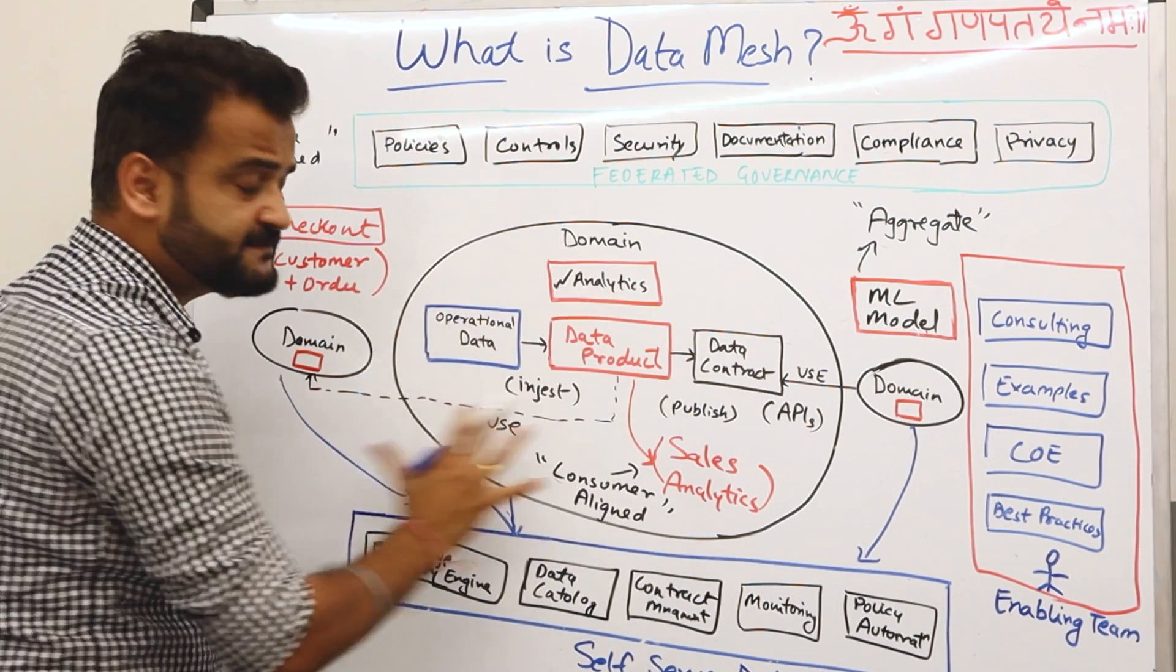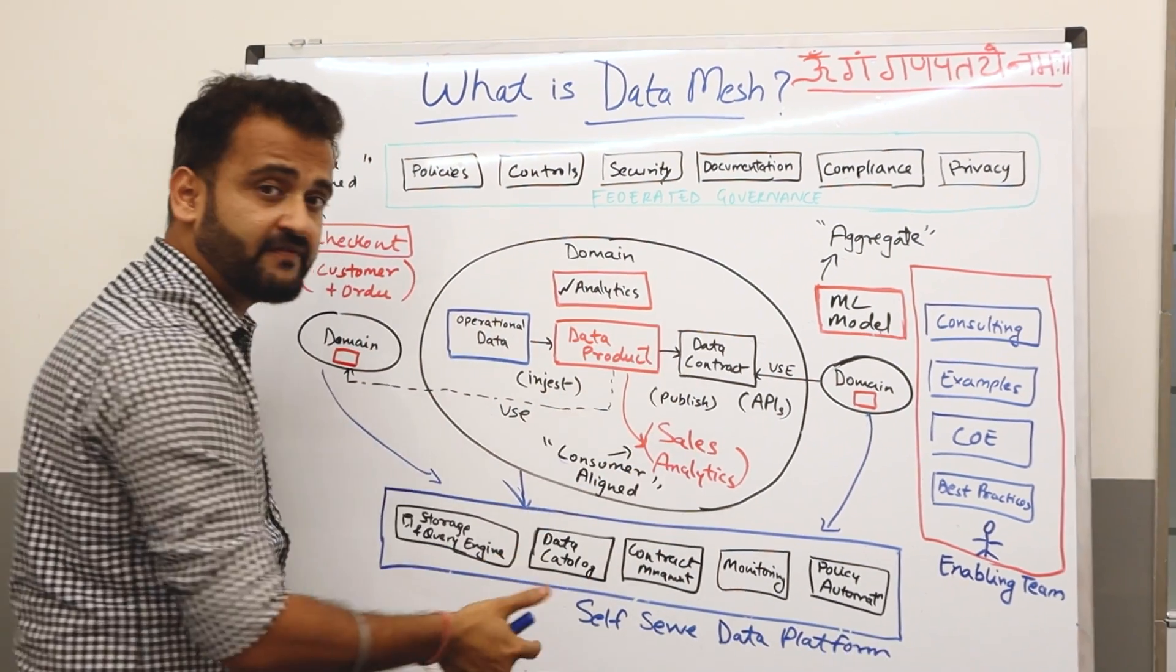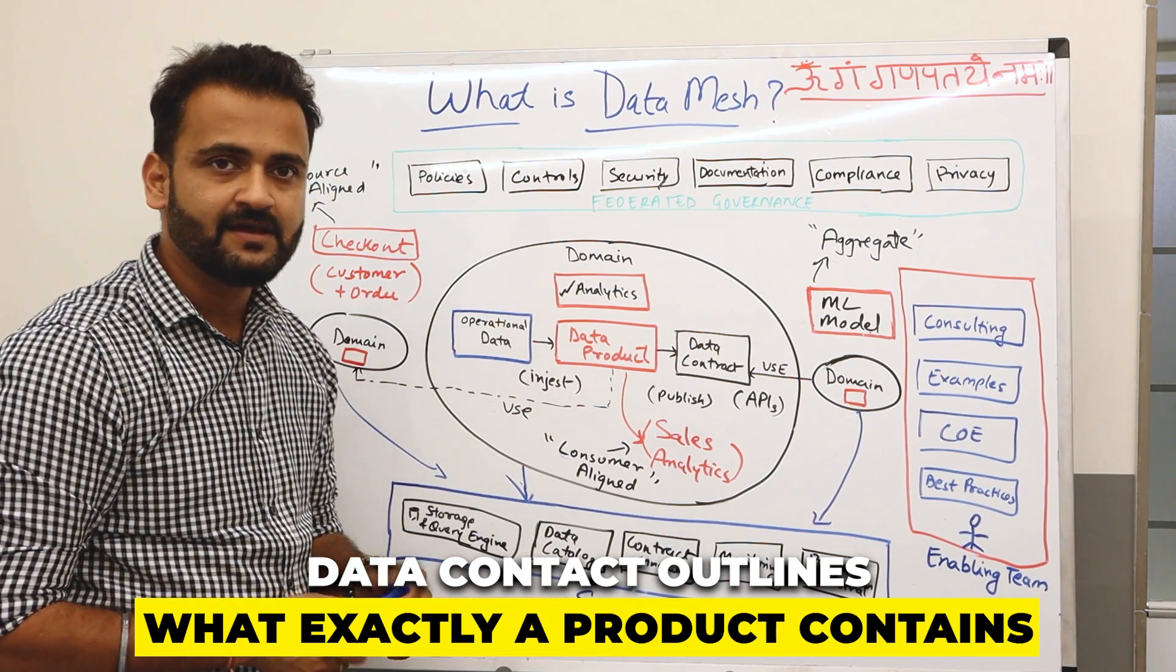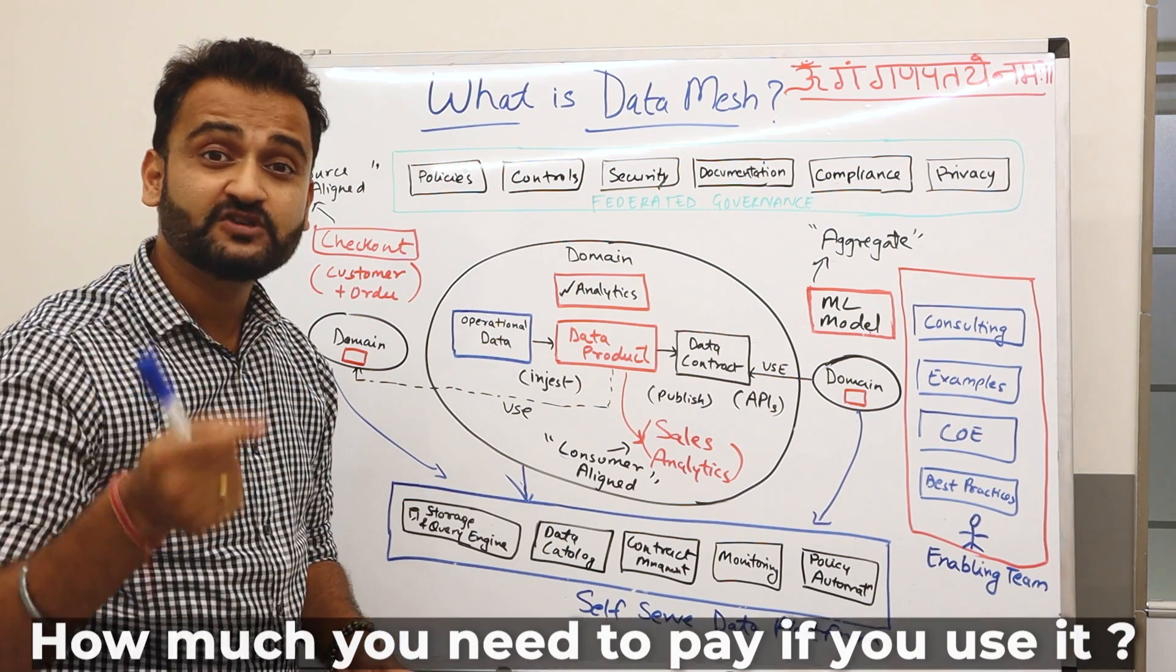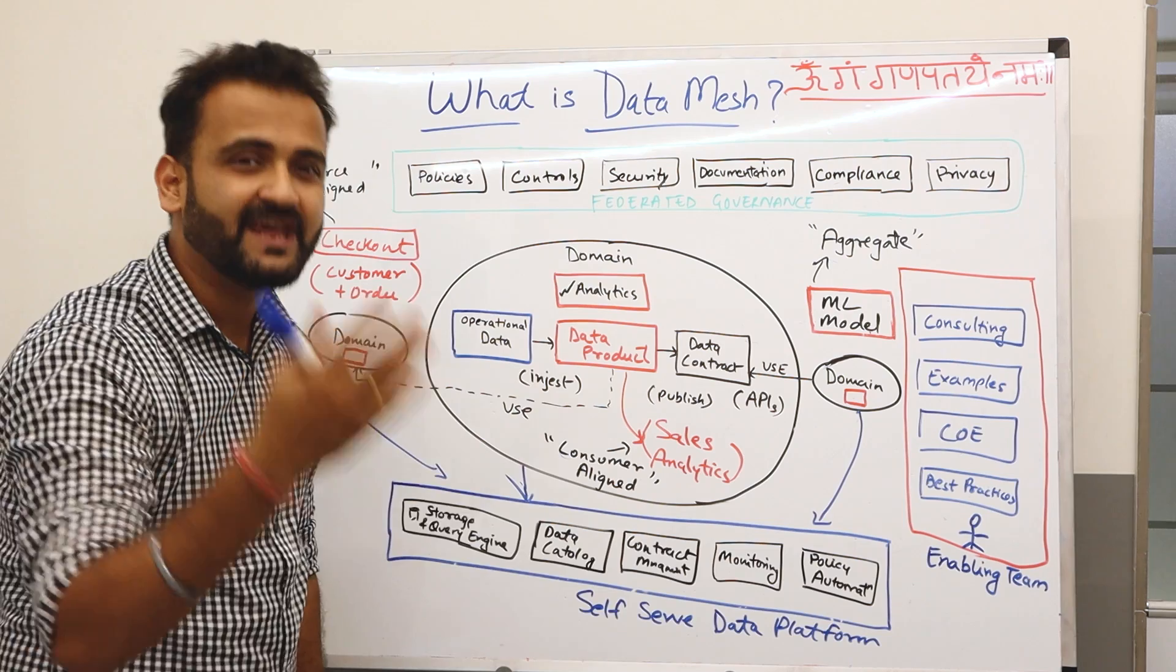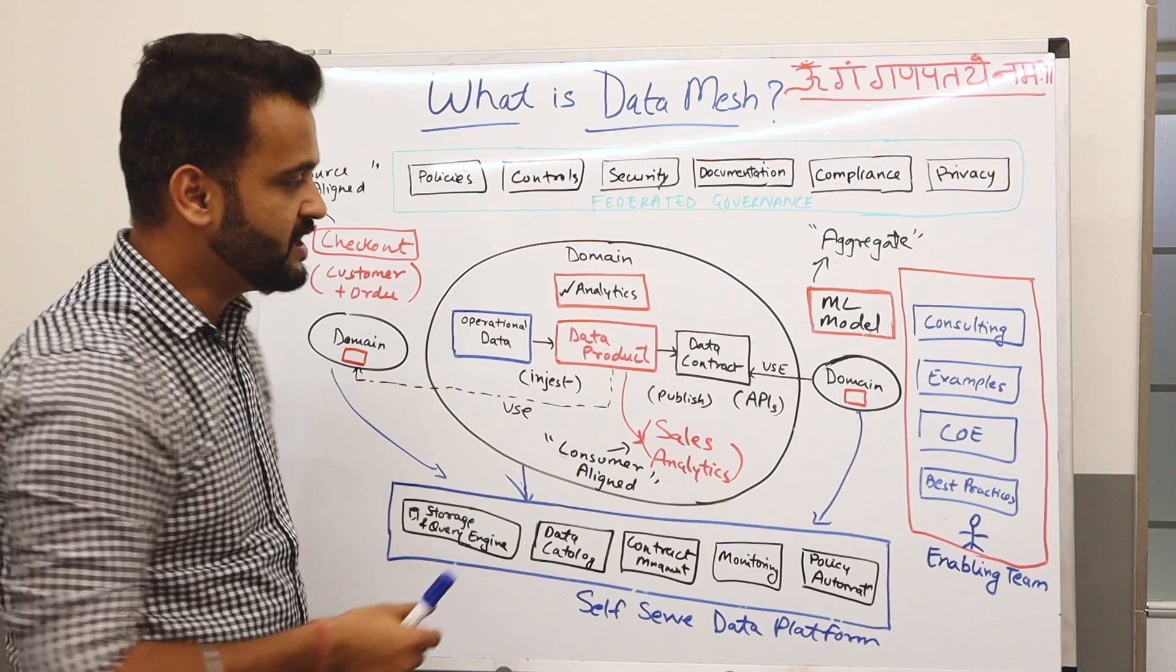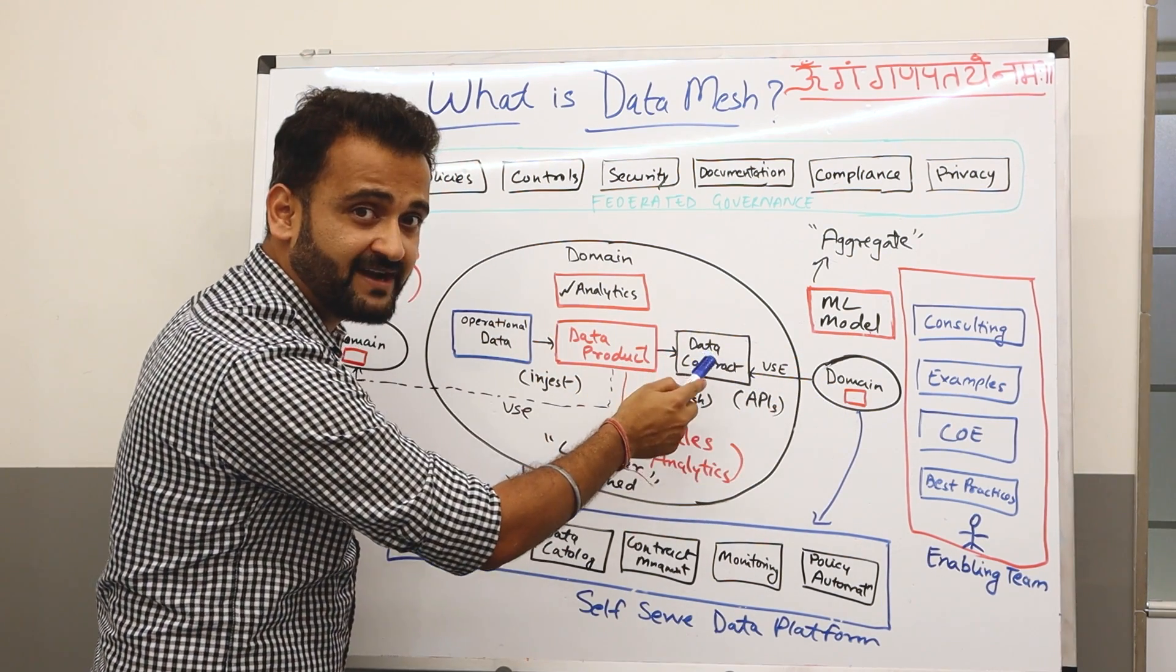This particular data product, for example let's say that it is sales analytics, name this product as sales analytics. Once this product is ready, the product owner of this particular domain will create a data contract. What is a data contract? Data contract outlines what exactly this product contains, what all things, what all information, what all standards it has. Also how much you need to pay if you have to use it. Generally these data products are exposed using APIs, like how we do in microservices. Similarly we will have APIs which will be exposed.